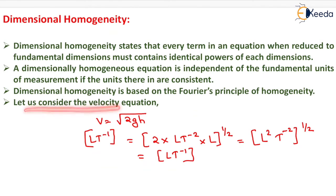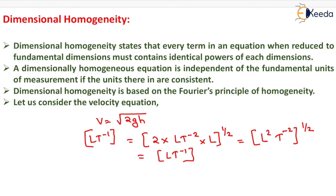Let us consider the velocity equation v = √(2gh). The dimension of v is LT⁻¹, the dimension of g is LT⁻², and the dimension of h is L. The power 1/2 is because of the square root. After solving, we have (L²T⁻²)^(1/2), which reduces to LT⁻¹. So the left hand side is equal to the right hand side, as shown here.